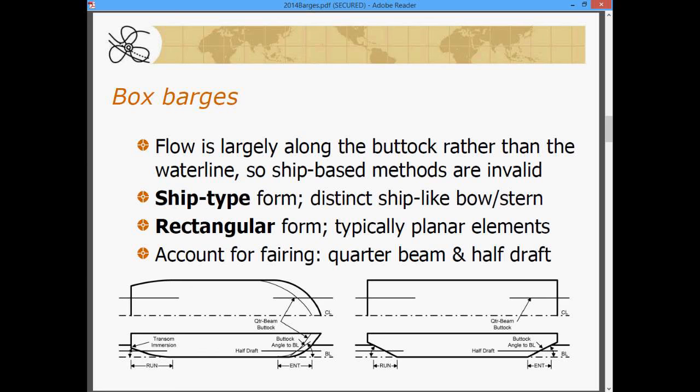We need to distinguish two different kinds of box barges, a ship-type form that has a distinct ship-like bow and stern, still very wide, very beany, very short, very shallow, but it has more of a ship-like characteristic at the bow and the stern.